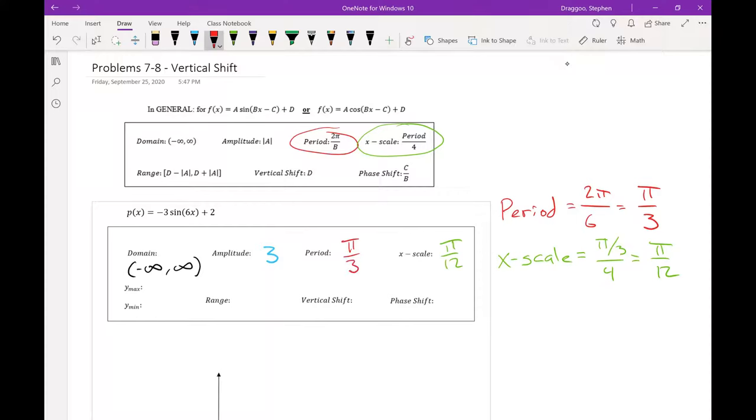The first change that we're going to see with the inclusion of this vertical shift will be the changes to the minimum and maximum y values as well as the range. So this vertical shift is just the value of d. So it's this plus 2 here at the end. My vertical shift this time is 2.